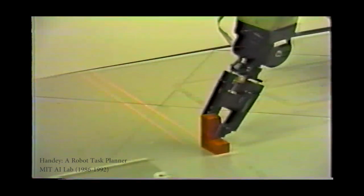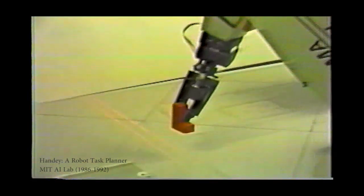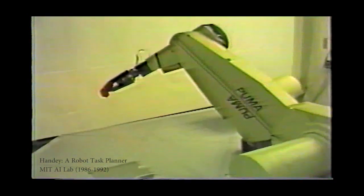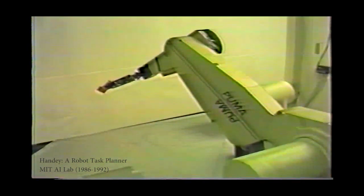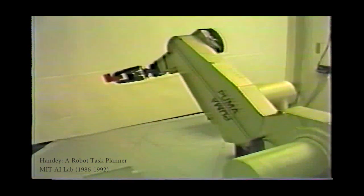Regrasps have been recognized as important for a long time. Here we see a video of the Handy system developed at MIT in the 1980s placing and picking an object, which is a common regrasp strategy for robots.